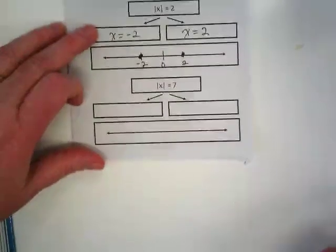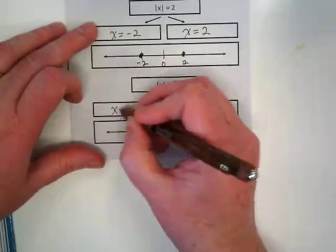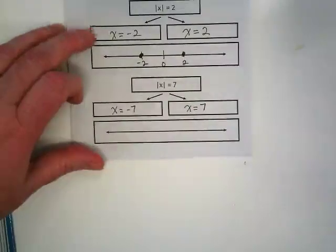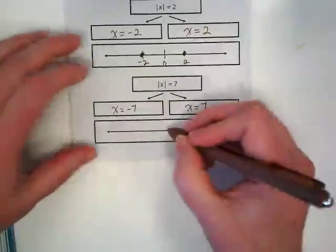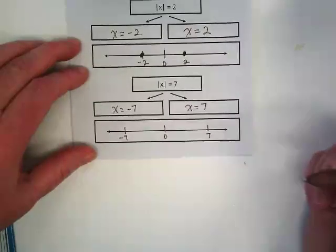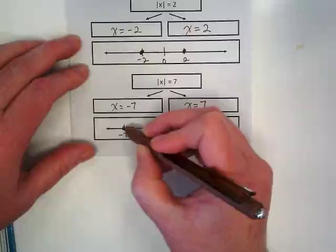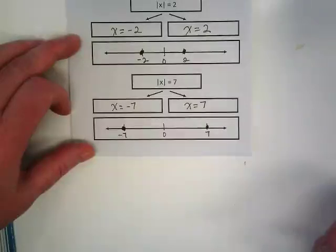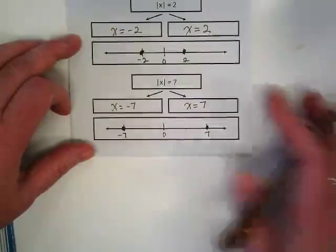Try doing the last one on your own. So these are nice and easy when the absolute value is already isolated. Let's open it up and see some other examples.